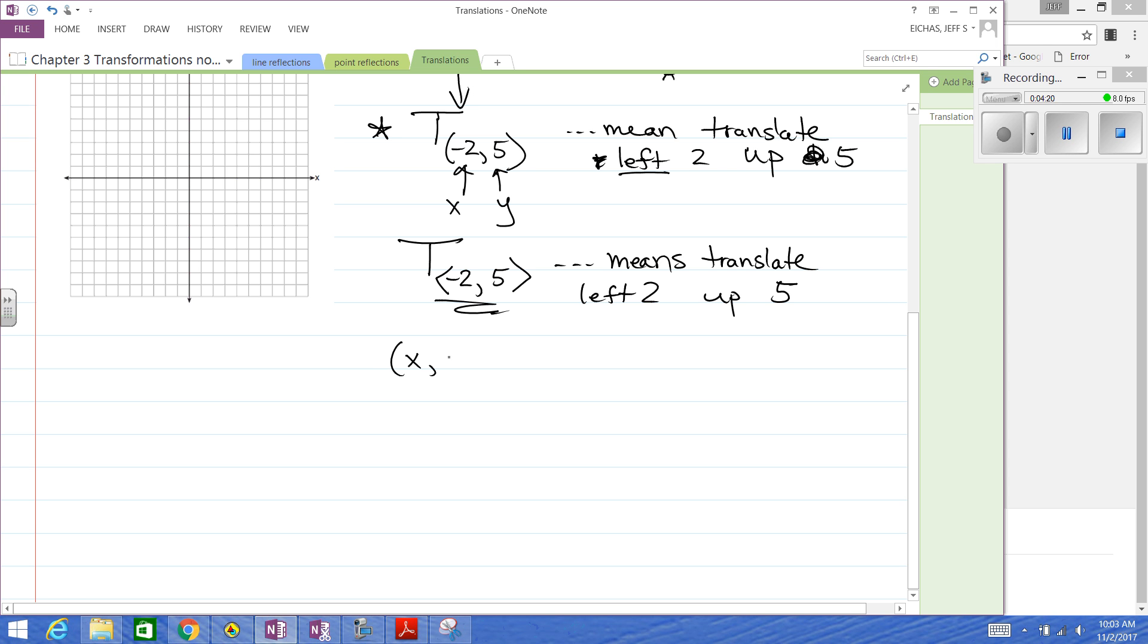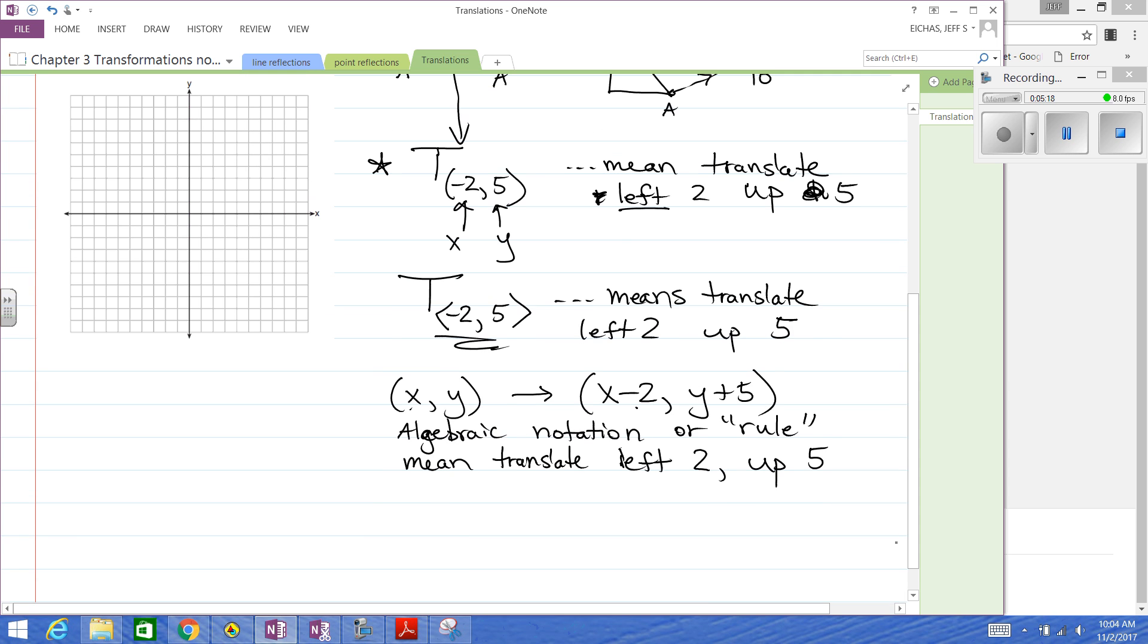Another way is this is writing the rule, and this one's easy to work with with translations. You're going to have, and if we use the same one, it's going to be x minus 2, y plus 5. So this is the algebraic rule, algebraic notation or rule. The rule is kind of saying, what's going to happen to x? Well, we're going to take 2 away from x. What's going to happen to y? We're going to add 5 to y. So that's going to mean the same thing. That's going to mean translate left 2, because subtracting 2 is going to move it left 2 from the x, and then up 5, because when you add 5 to the y, it's going to push the points up. So pretty reasonable. This shouldn't be too terrible, this one here.